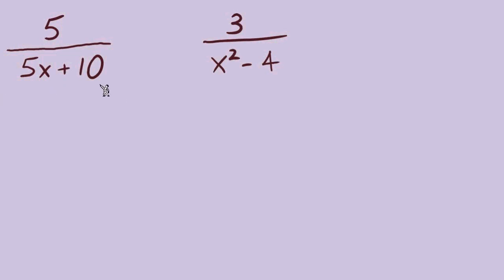To find LCD, we're starting with factoring the denominators. On the left side, two terms. We're thinking, is there a GCF? There is a 5 we could divide out from each term. That will leave us with x plus 2 in parentheses.